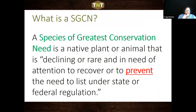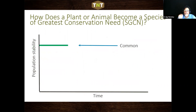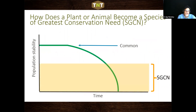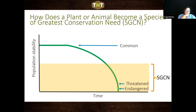What is an SGCN? A species of greatest conservation need is a plant or animal that is declining or rare and in need of some kind of attention to help recover its population, or to prevent it from needing to be listed under a state or federal regulation. Generally, a species becomes an SGCN when, through population decline, habitat destruction or alteration, its numbers start to drop. Taxa biologists and experts then declare it an SGCN, which allows funding to study that species and take steps to reverse the downward trend.